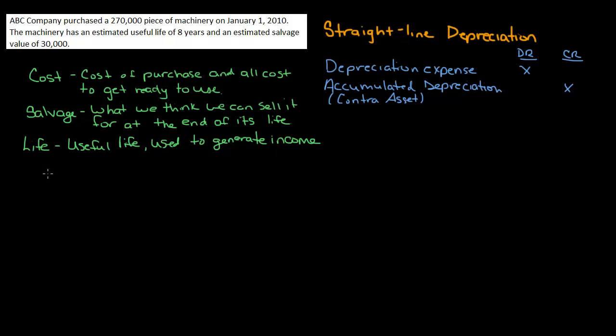So our formula for straight line is cost minus salvage divided by life. So if we did that for this fact pattern, we're purchasing a $270,000 piece of machinery on January 1st. So notice we have it the whole year, right?